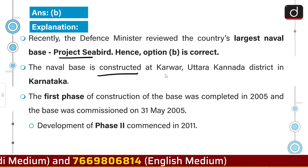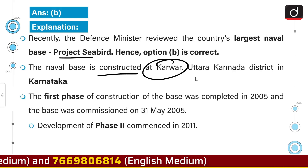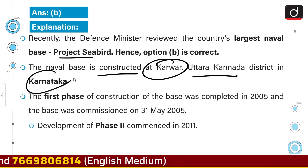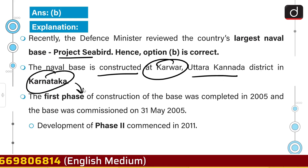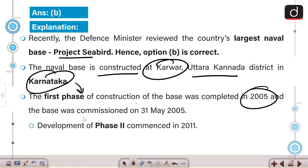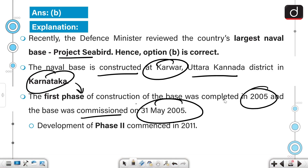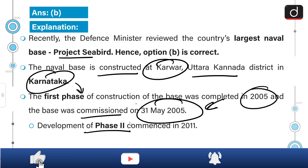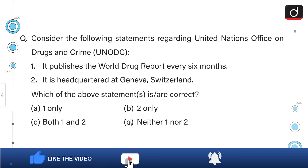The naval base is constructed at Karwar, Uttara Kannada district in Karnataka. The first phase of the construction of the base was completed in 2005, when the base was commissioned on 31st May 2005. Development of Phase 2 commenced in 2011.